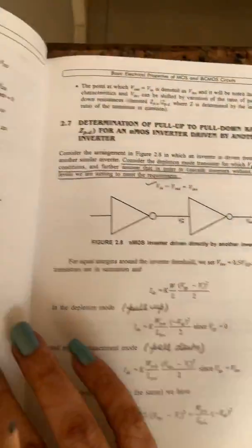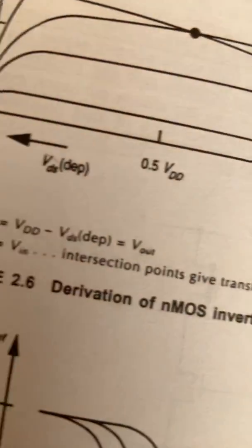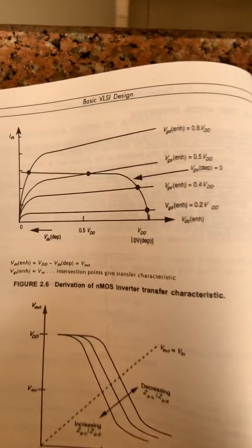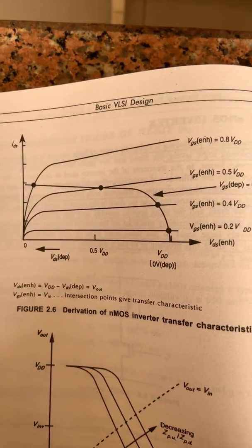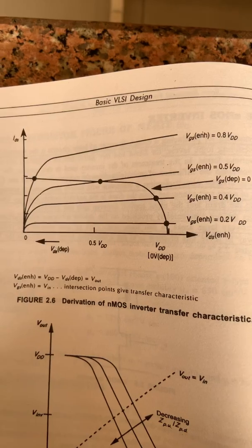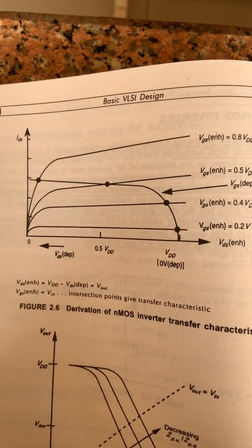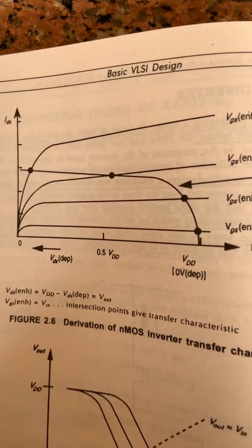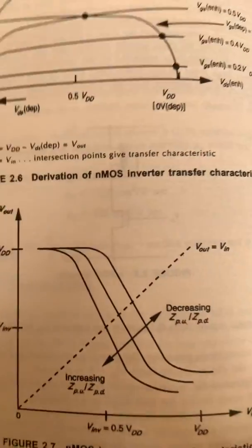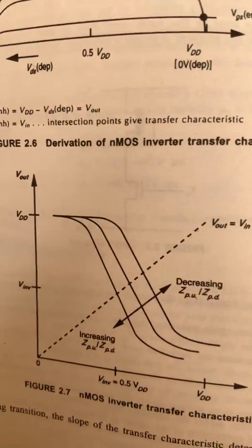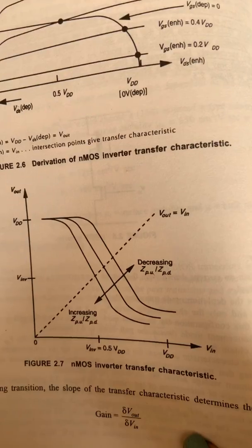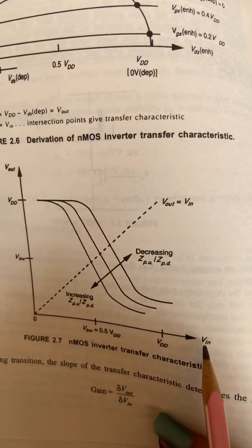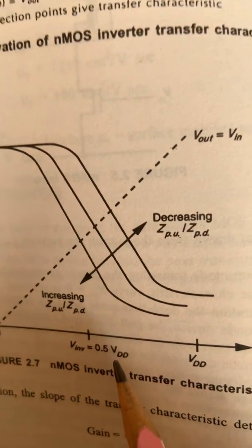Next we have the output waveform of an NMOS inverter. You can see the output waveform — it is between IDS and VDS, that is drain-to-source current and drain-to-source voltage. During transition, the gain is Vout upon Vin. The point at which Vout equals Vin is known as the inverter voltage, that is VINF.